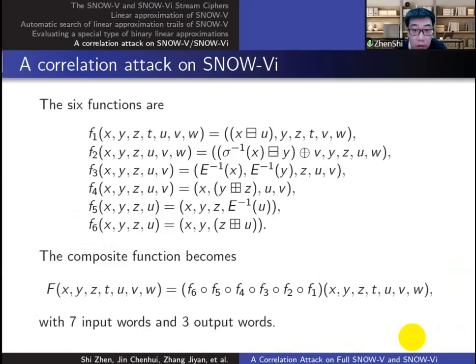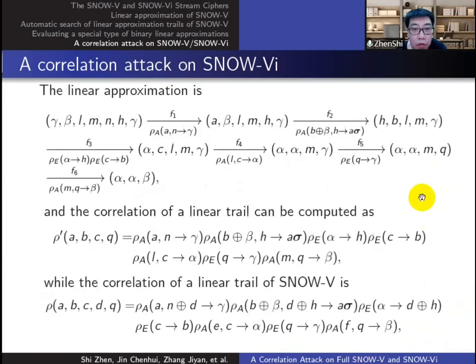For SNOW-Vi, we can construct sub-functions and the composite function in the same way. As the four LFSR types are mutually independent in SNOW-Vi, we shall take all of them as the input variables, which differs from the composite function of SNOW-V. Using the same method, we can get the linear approximation process of it and the correlations of linear trails.